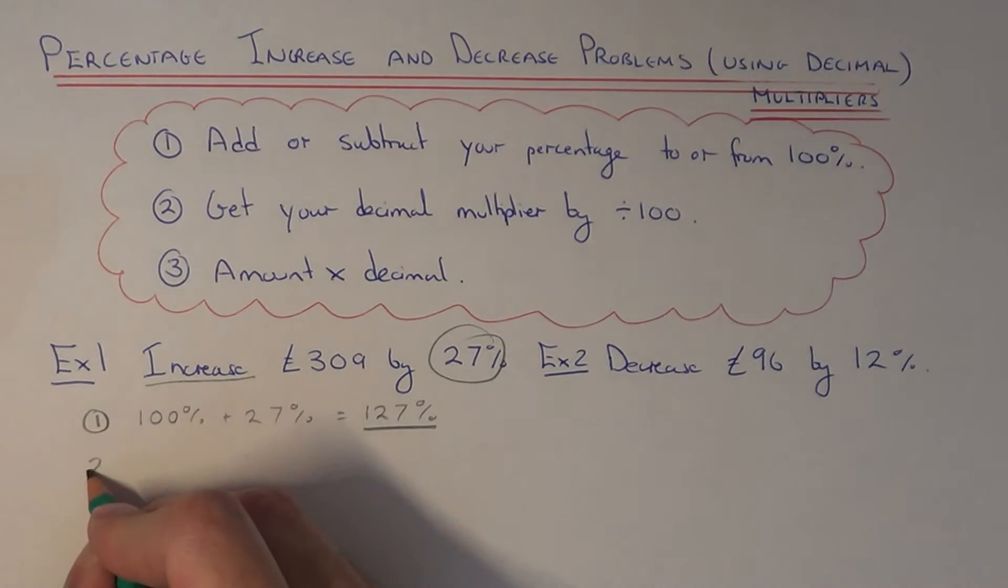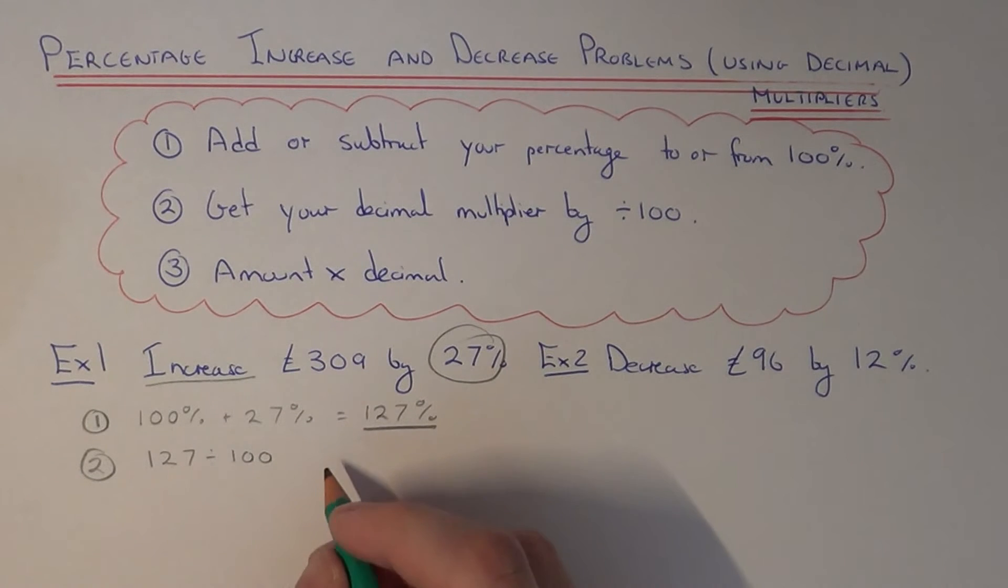So the next step, step two, is we need to convert this percentage into a decimal. And we do that by dividing it by 100. So we work out 127 divided by 100 which is 1.27. And this is our decimal multiplier.